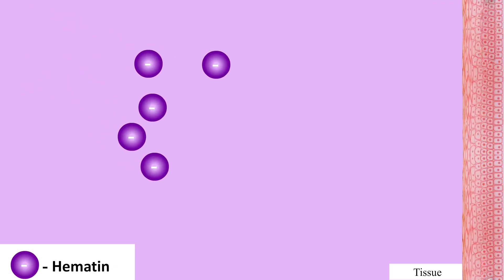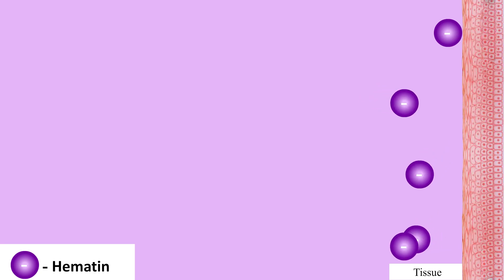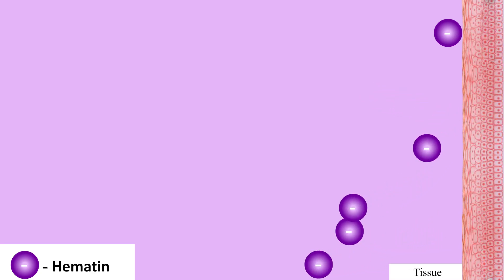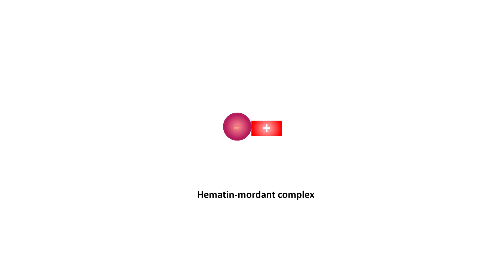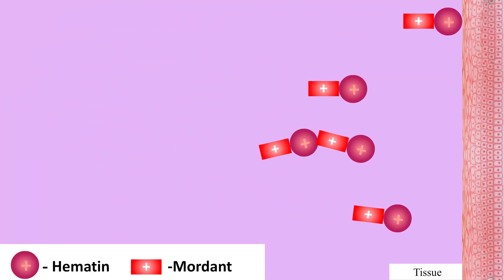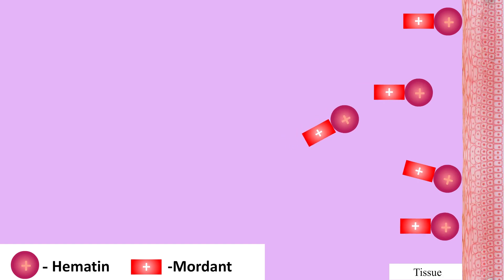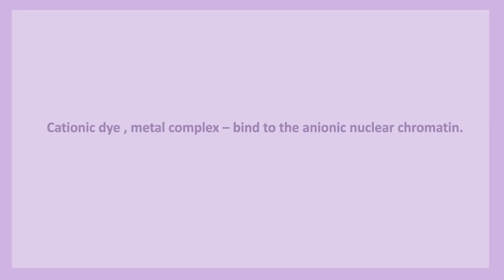A mordant is a weak anionic basic dye, therefore it has weak affinity to acidic cellulose structures. Combined with the mordant dye component, it gets a positive charge and increases affinity for selected tissue elements. The cationic dye metal complex binds to the anionic nuclear chromatin.